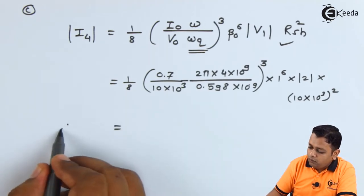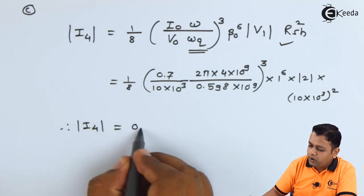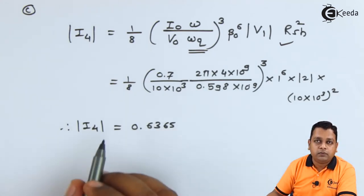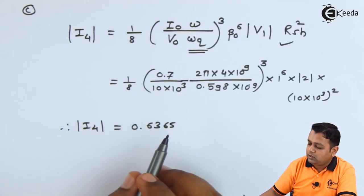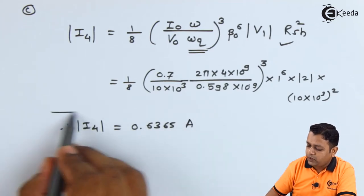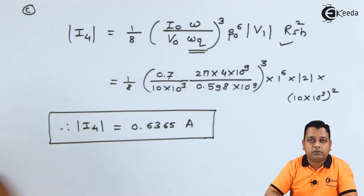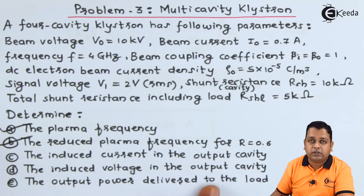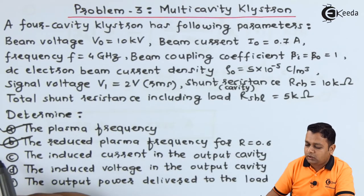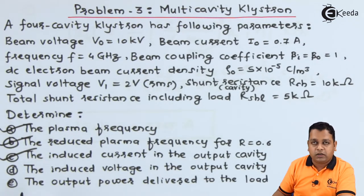Finally, |I_4| is computed as 0.6365 Amperes. Since this is a current measured in the SI system, the unit is Amperes. This value is noted. Returning to the problem statement, the induced current in the output cavity for part C has been determined. The next task is to determine the answer for part D.